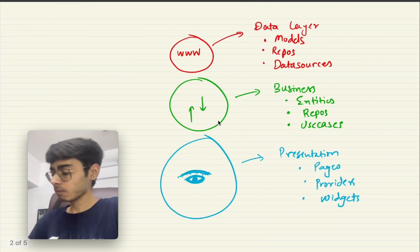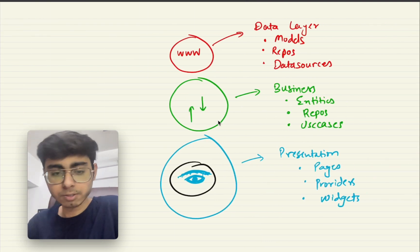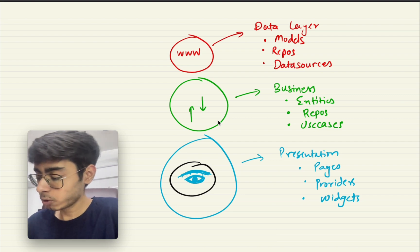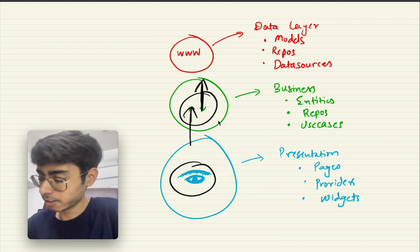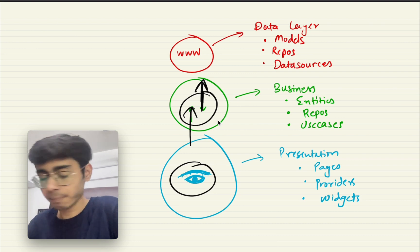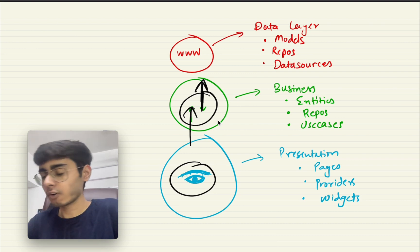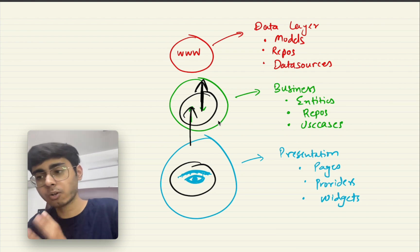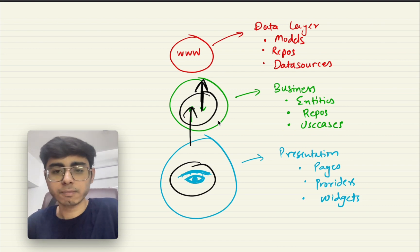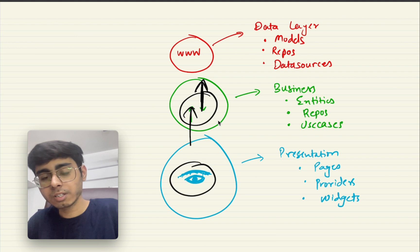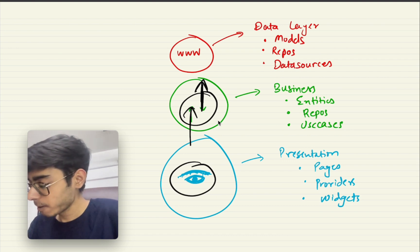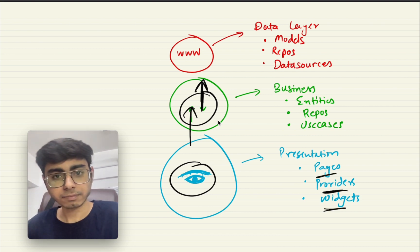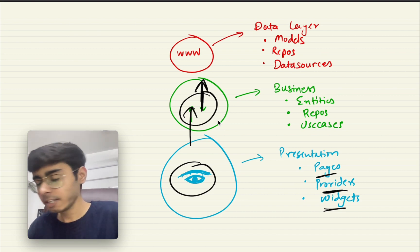Presentation is your visible layer. Business layer is like a bridge — it takes the data from your presentation layer and passes it on to the data layer. The data layer is your network layer; it holds data or calls APIs to get your data. Network calls happen here. Inside your presentation layer, you need to have folders for pages, providers, and widgets. Instead of providers, you can have a BLoC folder — this is your state management.